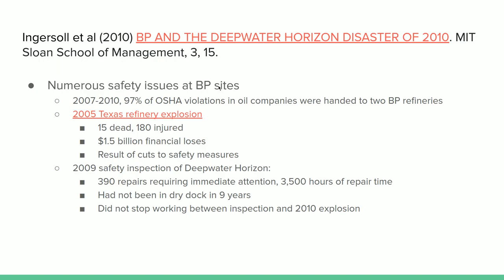One thing the Ingersoll article highlights is the record of safety issues at BP. In 2005 there was a big refinery explosion in Texas — one of BP's oil refineries exploded, killing 15 people, with a whole lot of people injured. It was a major news story at the time. It caused $1.5 billion in financial losses to pay for environmental damage and civil lawsuits from people who were injured or killed. This big expense caused BP to reduce their attention to safety issues — they were cutting the budget on safety measures and just not prioritizing it generally.